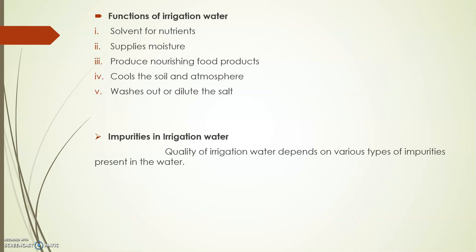The next function is that irrigation water, with controlled supply, washes out or dilutes salts in the soil. Whatever salts are dissolved can either be diluted or washed out. The last function is that irrigation water reduces the hazard of soil piping — with adequate irrigation, large soil piping will not form.